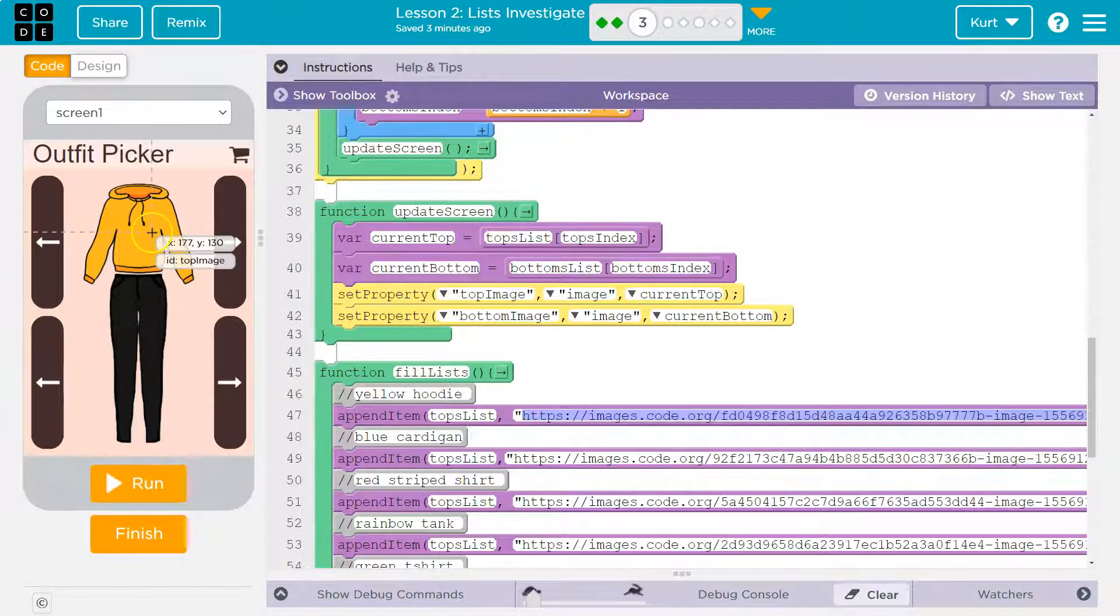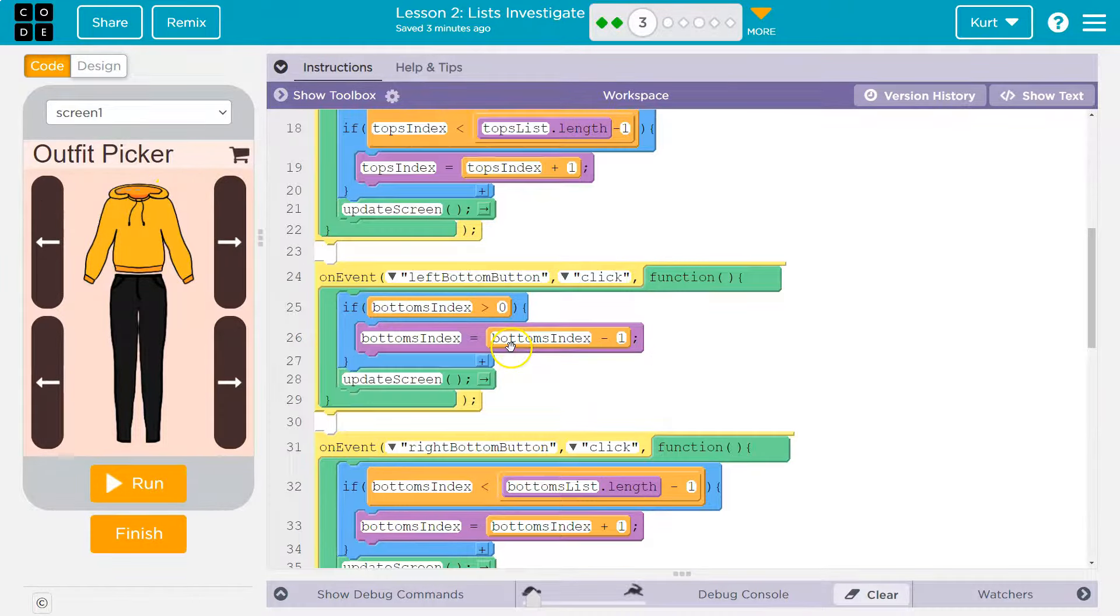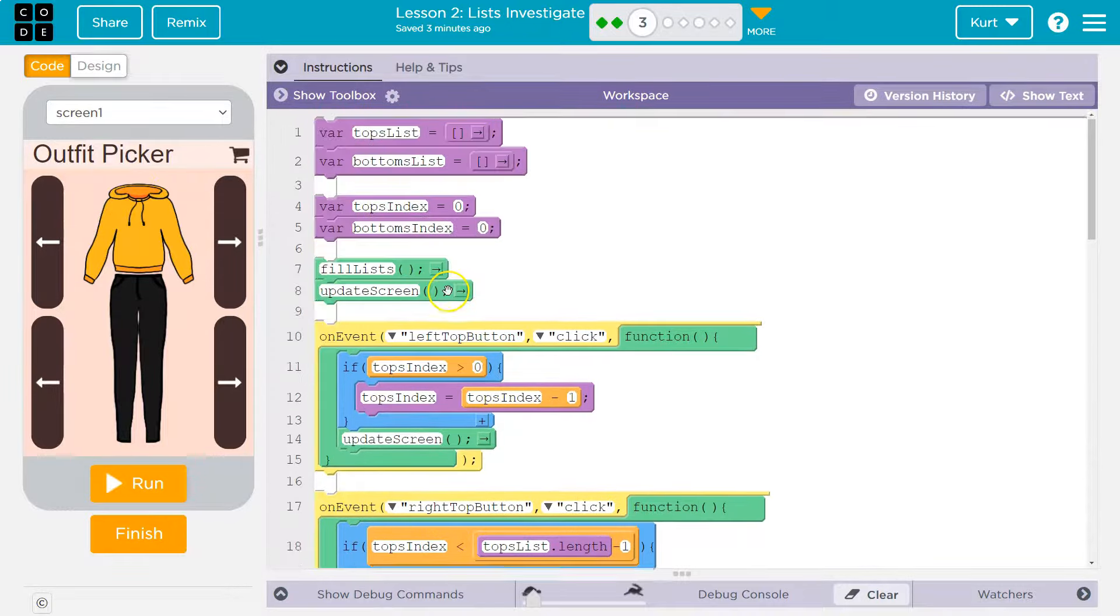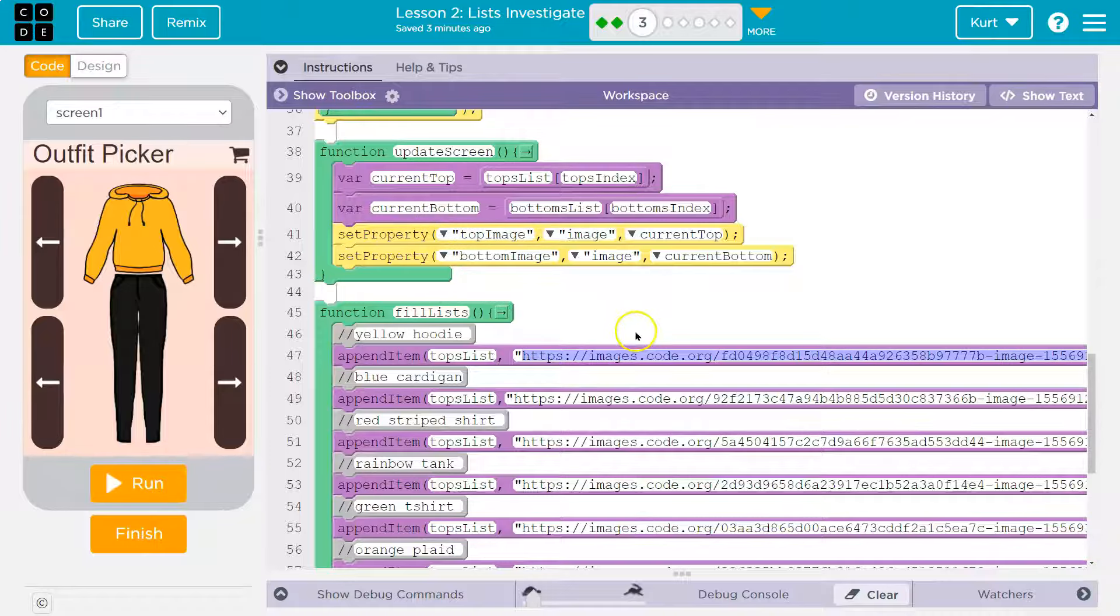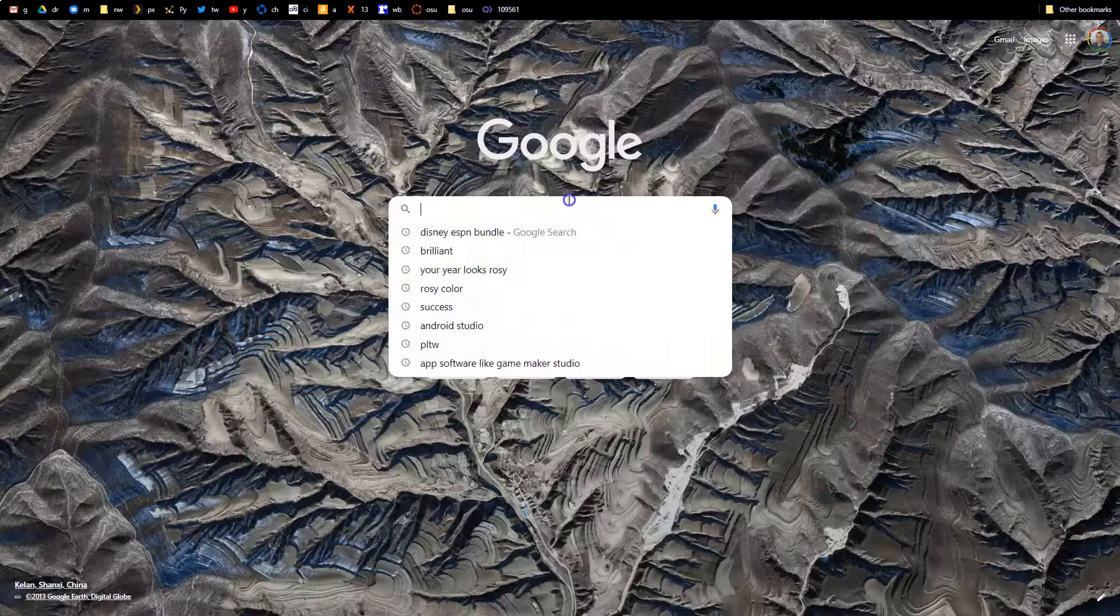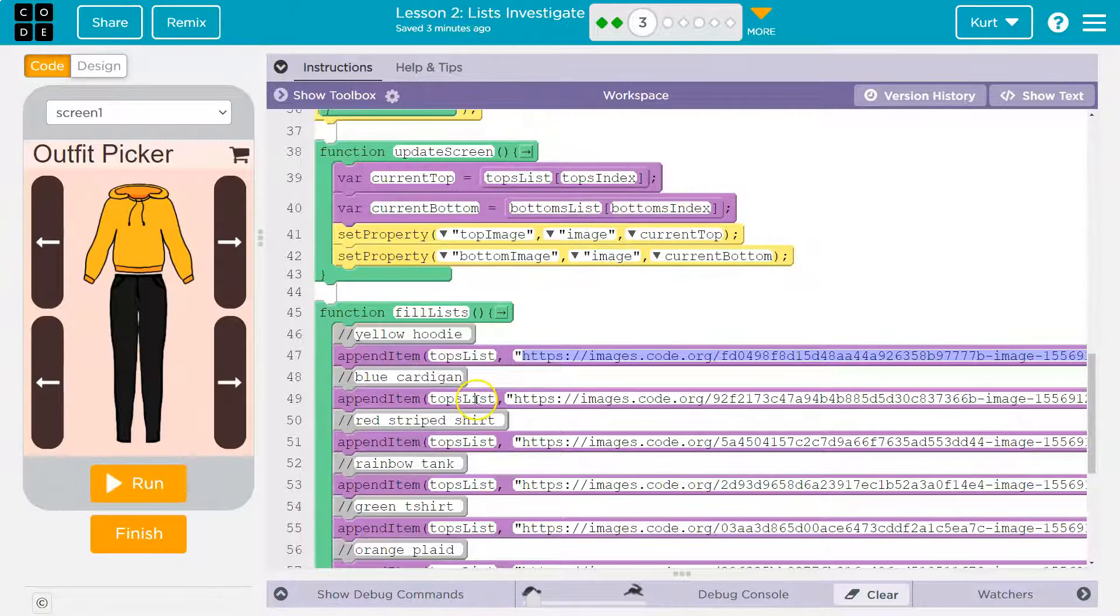And then this is update screen. So this will push that, set the property top image. So change this image to whatever we selected. And this response, keep in mind, the index is what part of the list we are in. So at the first index of our list or index zero, because lists are at zero or arrays start at zero. At the first index of our list is this shirt, of the top list.